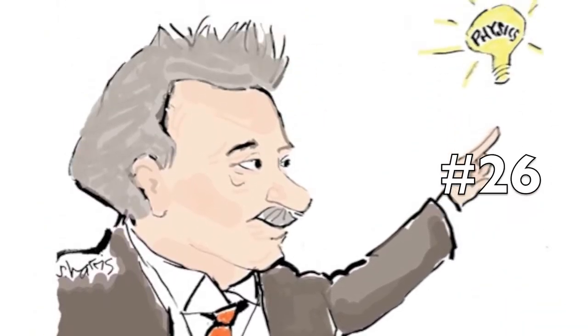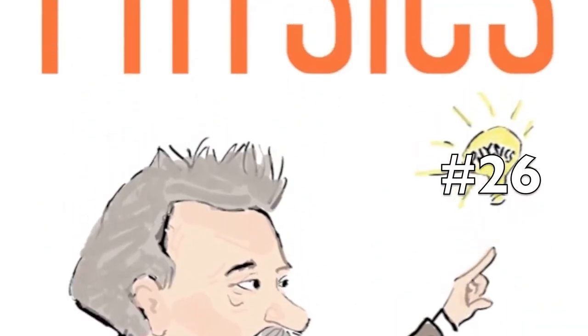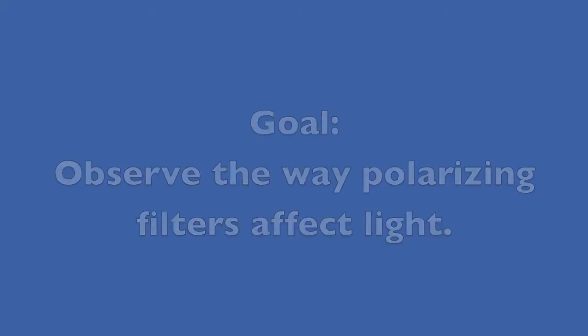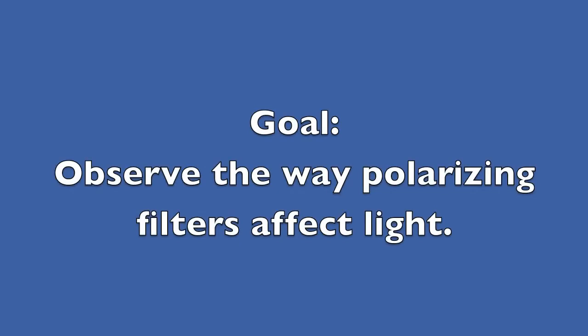This experiment shows how polarizing filters transmit only part of the light that shines on them, but particular molecules can rotate the light's plane of polarization.